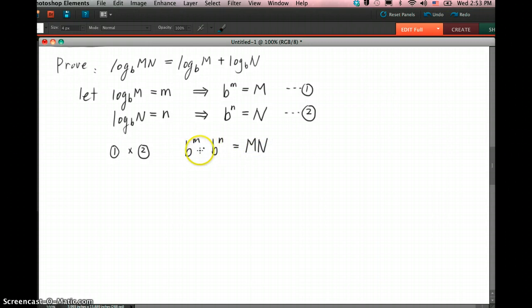And then just apply the rule of powers so we can combine these two. We get b^(m+n) equals MN.